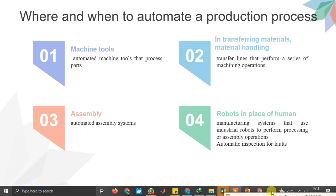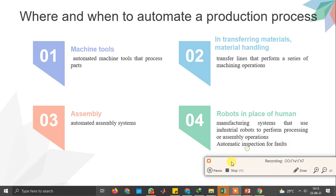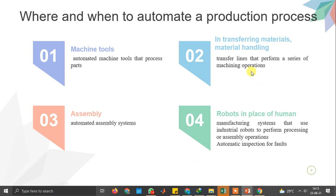Which components should I automate in a production process? The very first thing is machine tools. Here, if it is a manual process for transferring material, the biggest drawback is manpower involvement and delay — a man cannot transfer one ton of material from point A to point B, the reason being capacity. Machines can transfer multiple weights of materials from point A to point B.